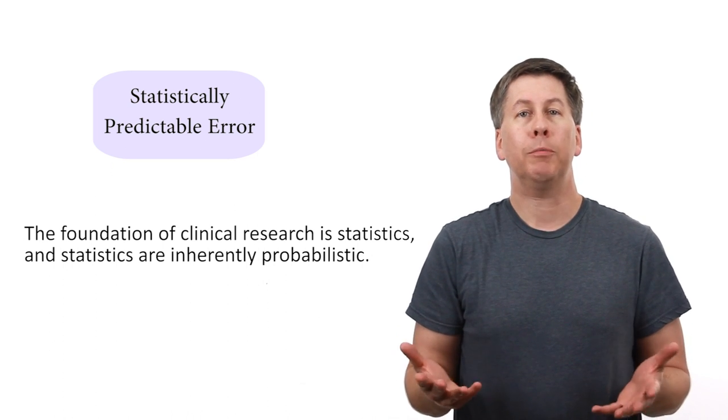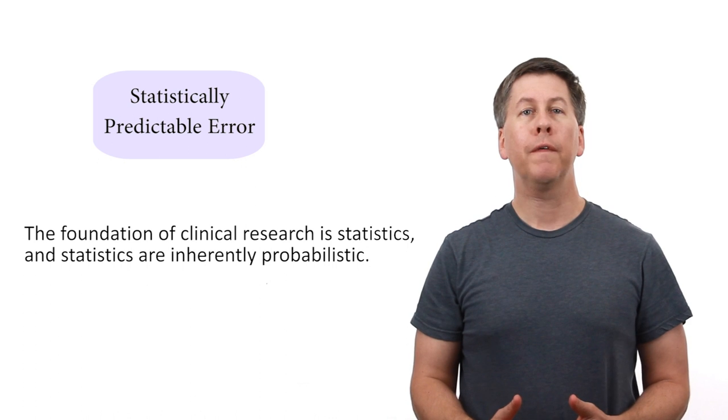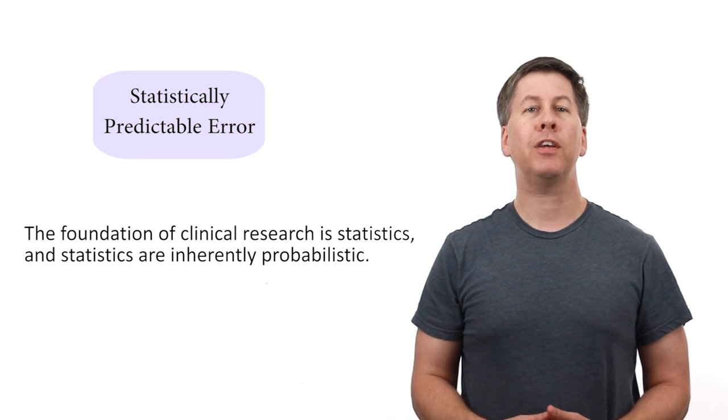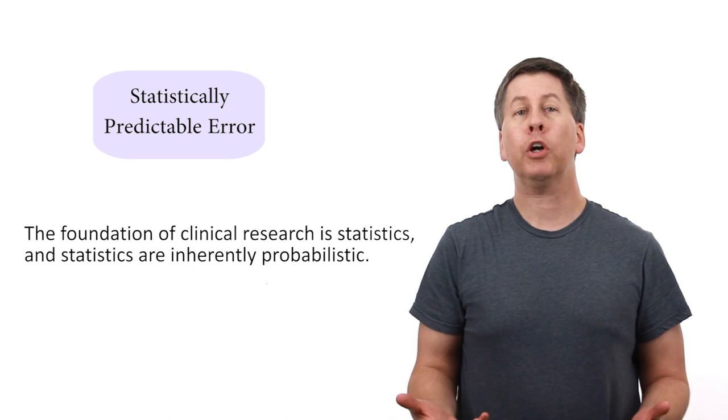So naturally, sometimes, research will appear wrong not because someone made a mistake, but rather because a statistically unlikely event happened to have occurred. There are standard cutoffs in clinical research as to how different the outcomes between two groups need to be in order to say that it is unlikely to be due to chance alone.